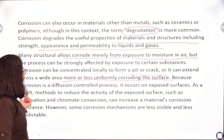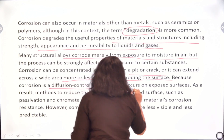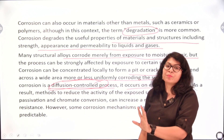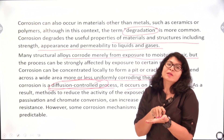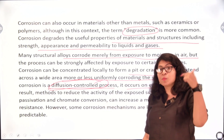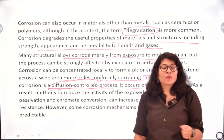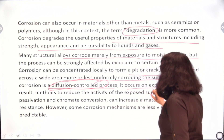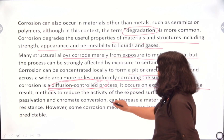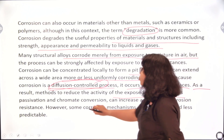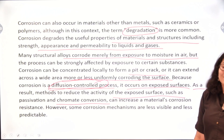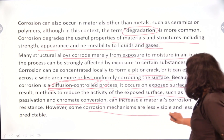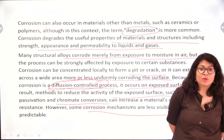Corrosion is a diffusion-controlled process — it occurs on exposed surfaces. Only when oxygen molecules get diffused onto the metal surface do they react with the iron to form its oxides. So only those parts exposed to air will get oxidized; if you cover the entire metal and only expose a tiny part, that exposed part will get corroded. Methods to reduce the activity of the exposed surface, such as passivation or chromate conversion, can help. However, some corrosion mechanisms are less visible and less predictable.